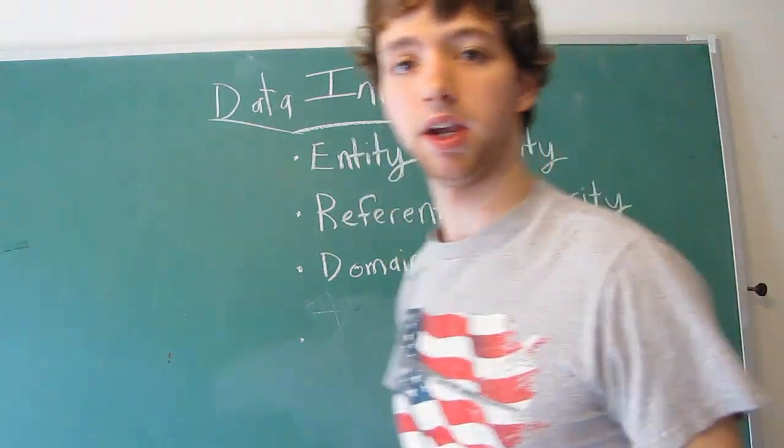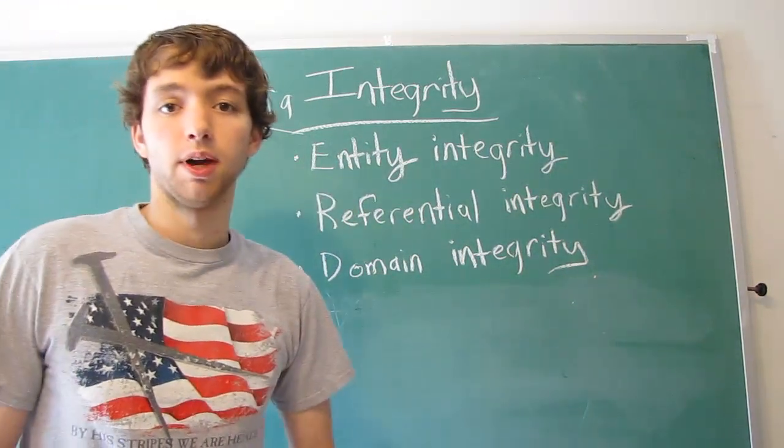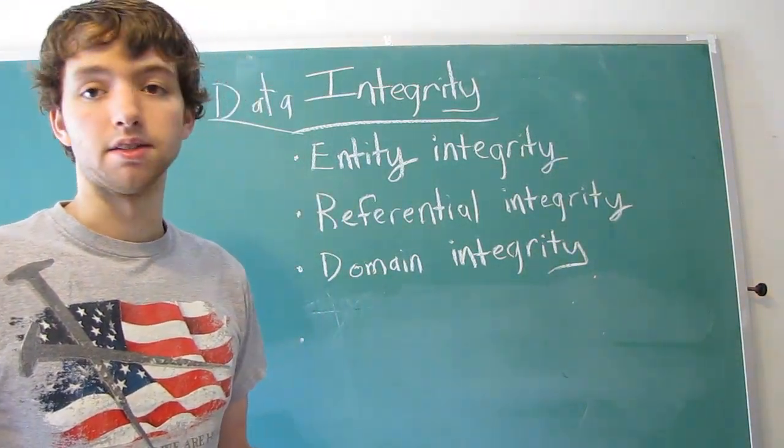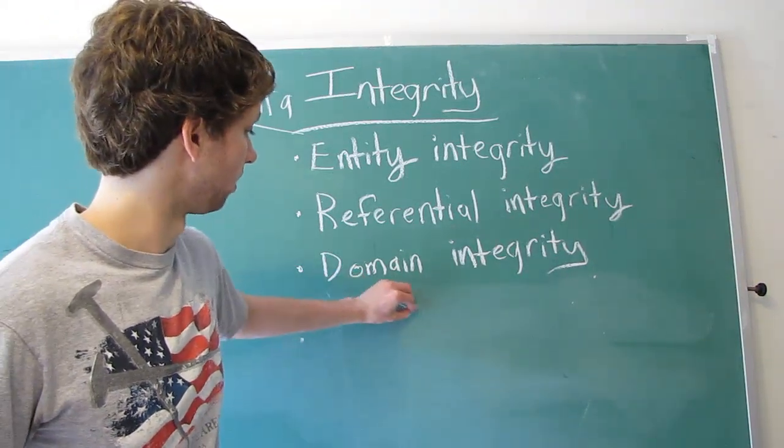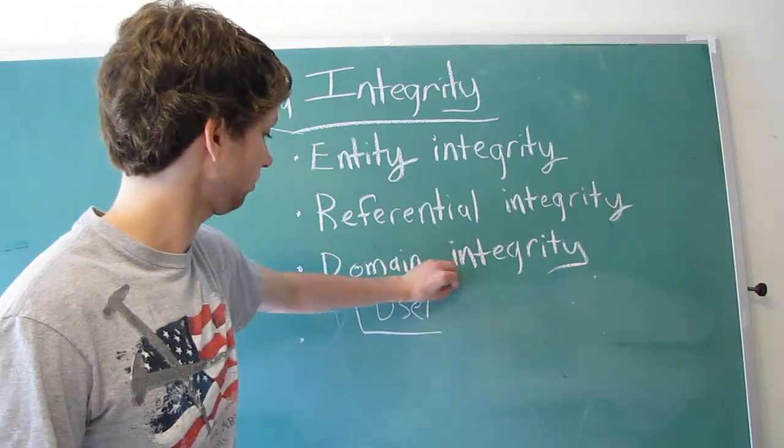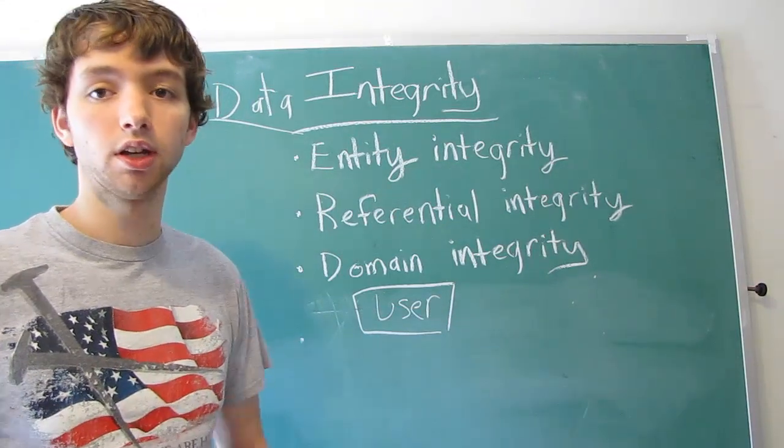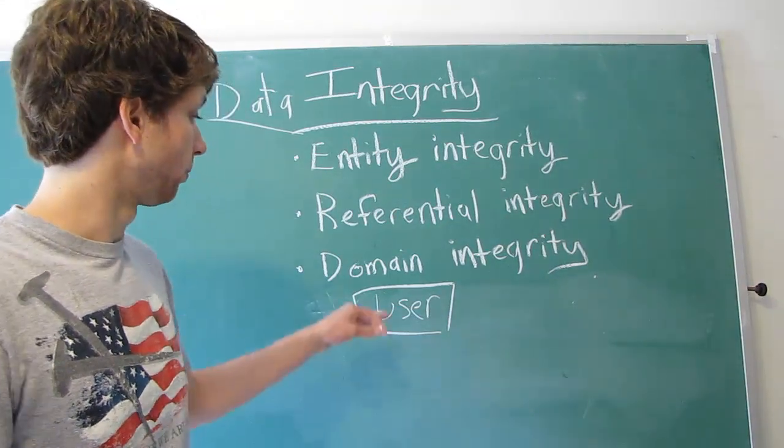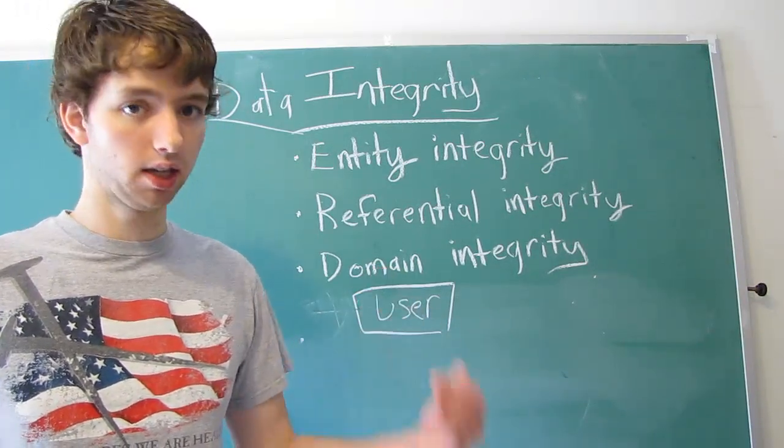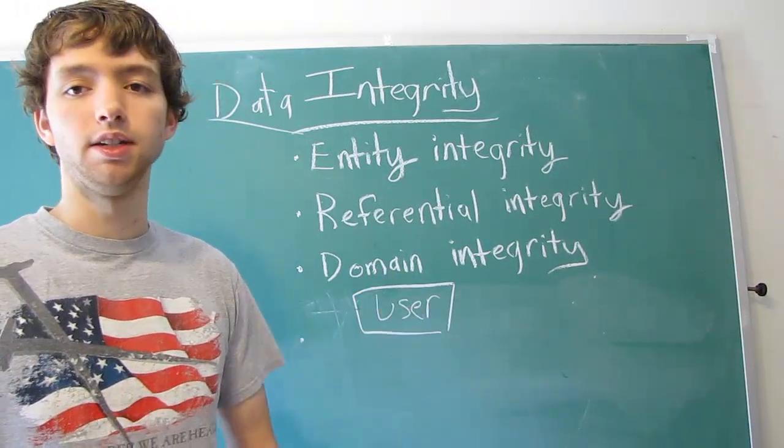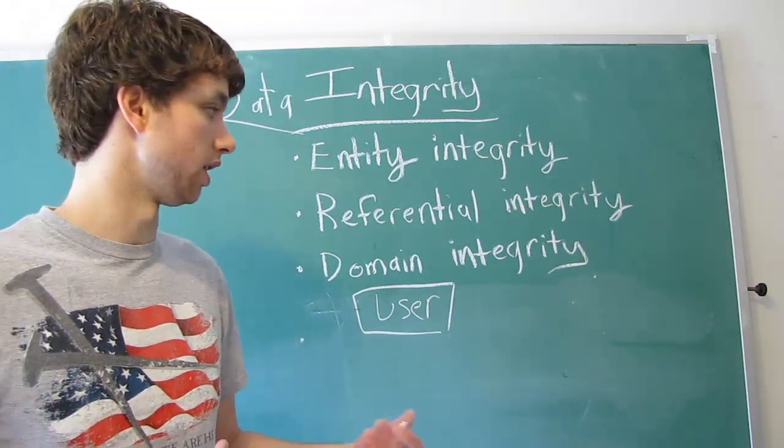So the three main types of data integrity. First one is entity integrity. We talked about entities in one of the first few videos. An entity is anything we store data about. So we had the user to begin with. This is an entity. What it means by entity integrity is basically unique entities. When we have a user, we often give them IDs. This is known as a key. So an ID is used to enforce uniqueness among the entities.